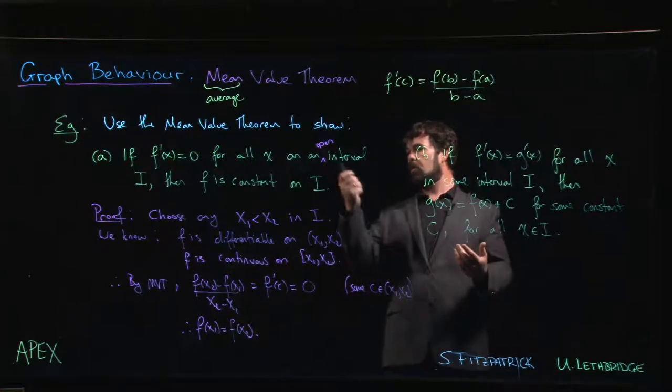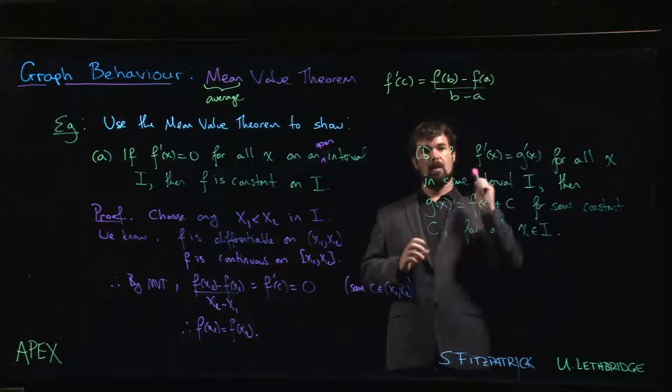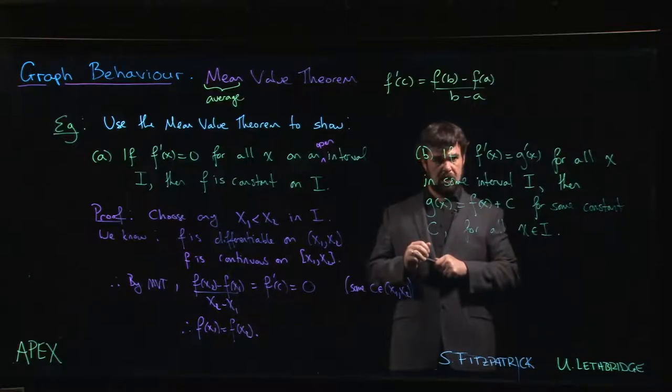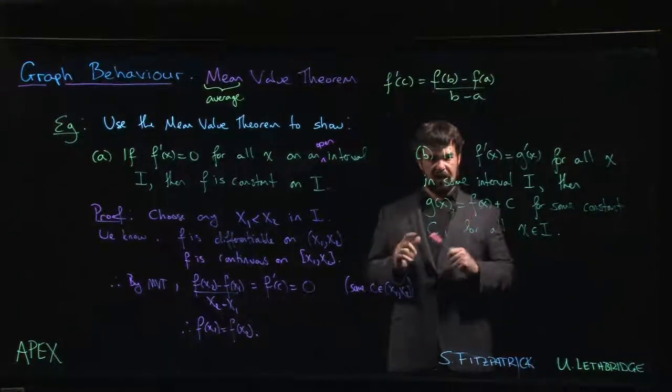So if the derivative is zero, the function has to be constant. All right, that leads us to the second one, part B. How do we do that? Stay tuned, we'll look at it in the next video.